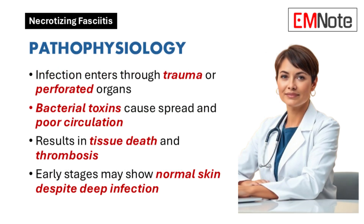Microbial invasion of the subcutaneous tissue occurs through external trauma or direct spread from a perforated organ, particularly those in the gastrointestinal or urogenital systems. Bacterial growth within the superficial fascia releases enzymes and toxins that cause the infection to spread. This process leads to poor microcirculation, ischemia in affected tissues, and ultimately cell death and necrosis. Thrombosis of small vessels traversing the fascia causes profound skin ischemia, which is a key feature in the progression of necrotizing fasciitis.